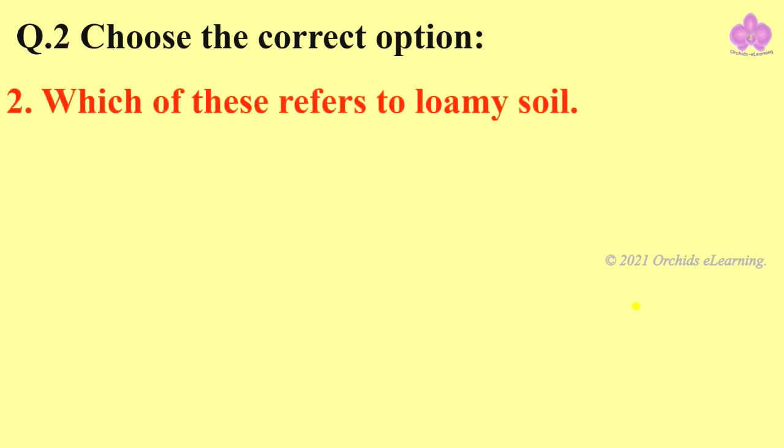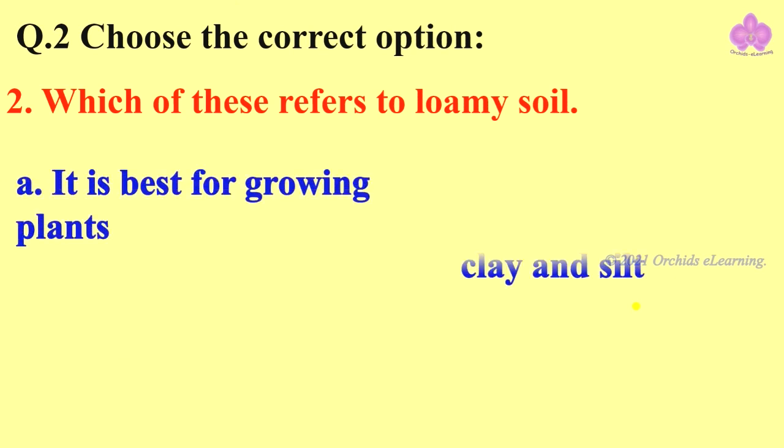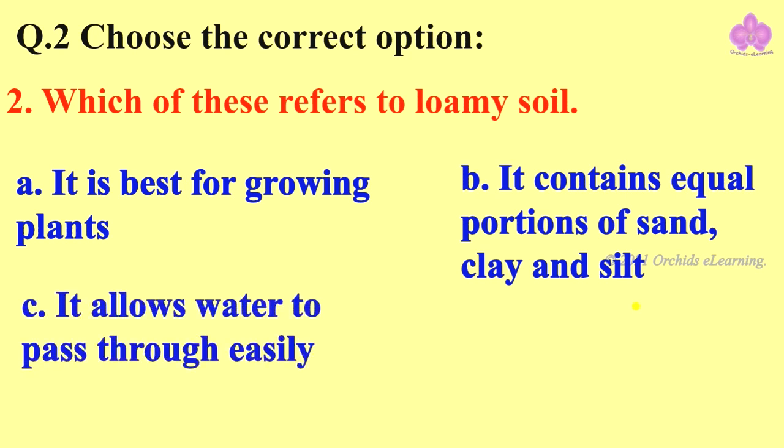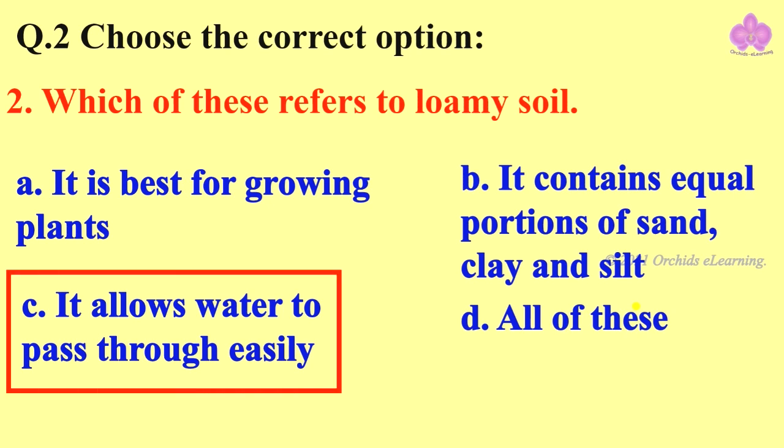Which of these refers to loamy soil? Option A: it is best for growing plants. B: it contains equal portions of sand, clay, and silt. C: it allows water to pass through easily. And D: all of these. Correct answer is C: it allows water to pass through easily.